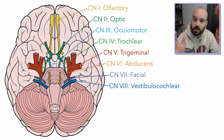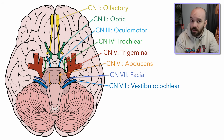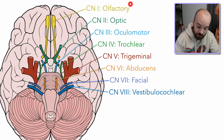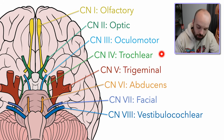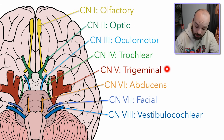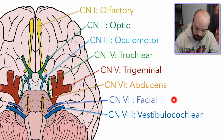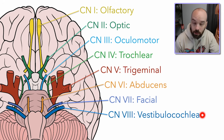Quick check-in: olfactory is sensory, optic is sensory, oculomotor is motor, trochlear is motor, trigeminal is mixed, abducens is motor, facial is mixed, and vestibulocochlear is sensory.